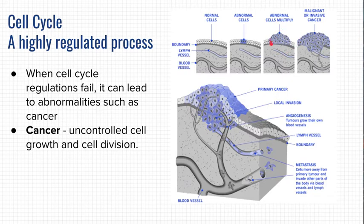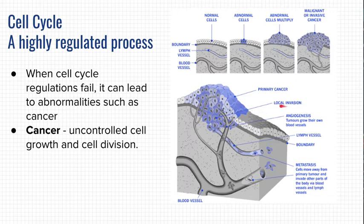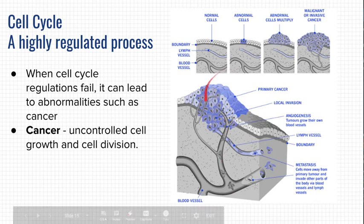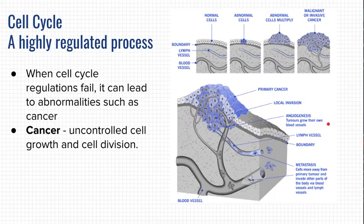That's why cancerous cells often create a mass called a tumor. Other abnormal things these cells do is produce growth hormones and signals that attract the growth of blood vessels — that's called angiogenesis. The tumor nourishes itself by making new blood vessels grow, supplying it with oxygen and nutrients. Some anti-cancer drugs target this angiogenesis, trying to stop the growth of new blood vessels and starve out the tumor.